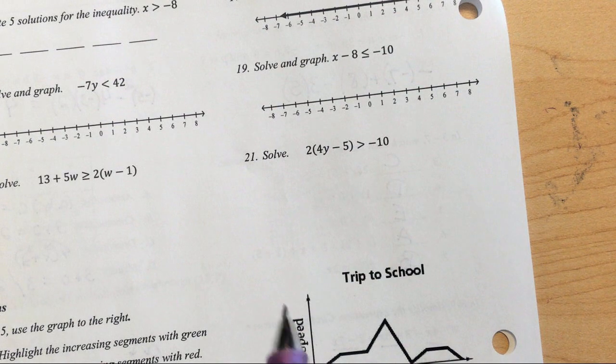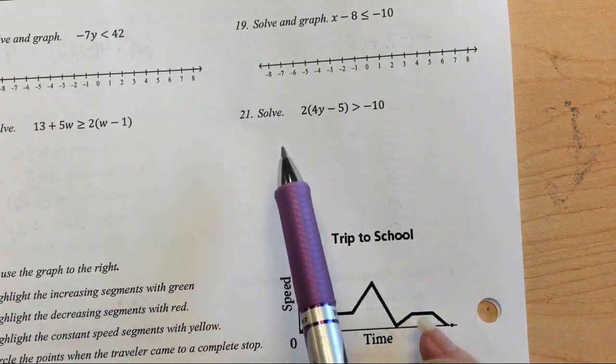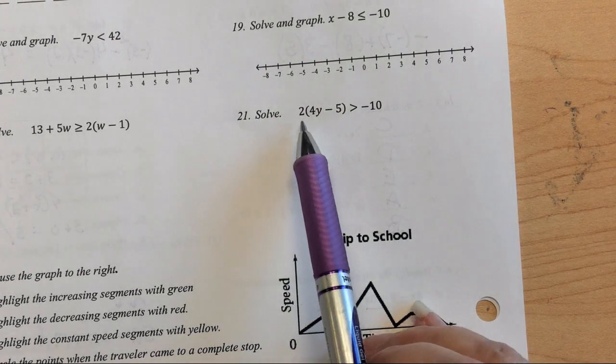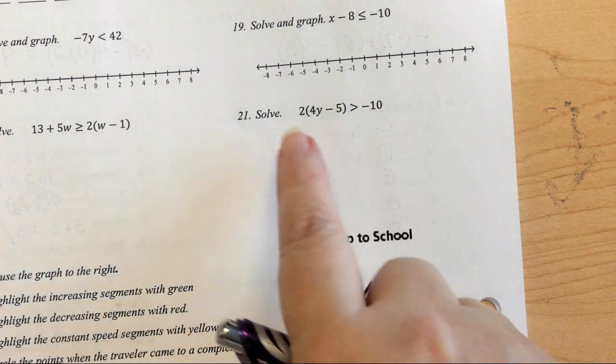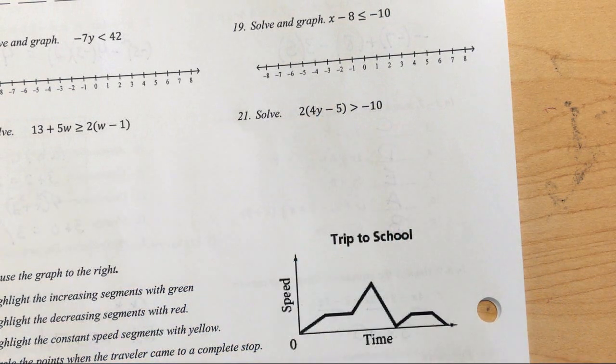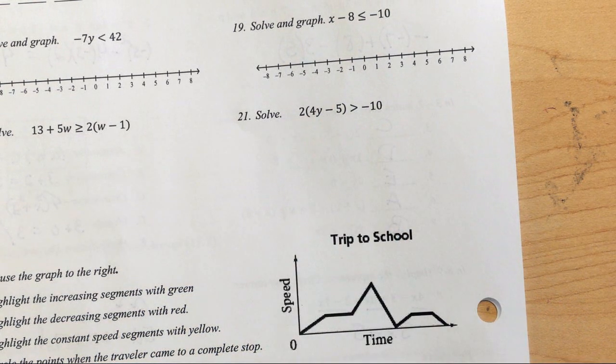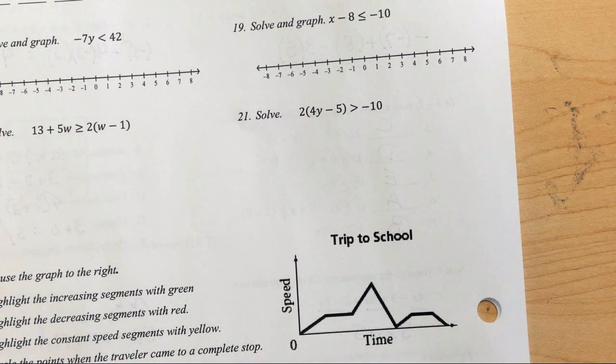I have to find 21 to hear that. Alright, number 21. The first thing you want to do is pretend that this is an equal sign. The only difference between this and your equals is when you multiply or divide by a negative, you have to flip that sign.